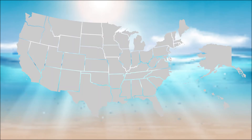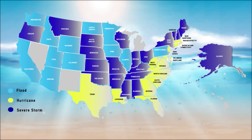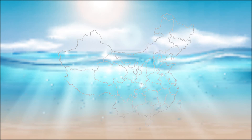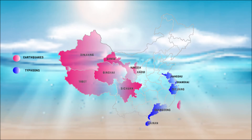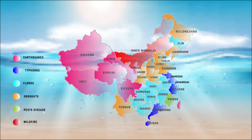The sheer size and geographic diversity of the United States mean the country experiences various natural disasters frequently. Every state is exposed to hazards including floods, hurricanes, severe storms, snow, and wildfires. In the last few decades, almost all types of major hazards except volcanic eruptions have hit China, including earthquakes, typhoons, floods, droughts, sandstorms, storm surges, pests, rodent disease, and forest and grassland fires. The US and China are tied in terms of natural disasters.